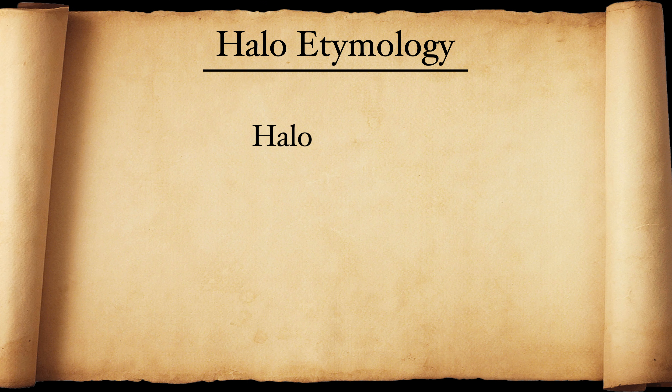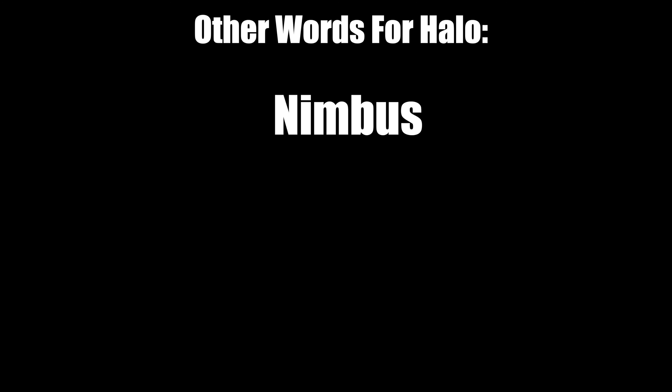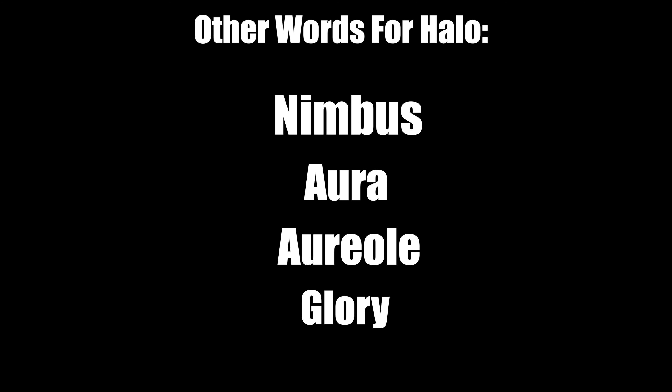The word halo comes from the Greek word halos, which actually has a number of different meanings, like threshing floor and grain on the floor. But halo also means disc, especially when referring to the sun, moon, or even a shield. Other words for halo are nimbus, aura, aureol, glory, or glorial. All of these terms have something in common: they are luminous, or they give off light. And this is our first clue to figuring out the historical concept of halos — they have something to do with light.